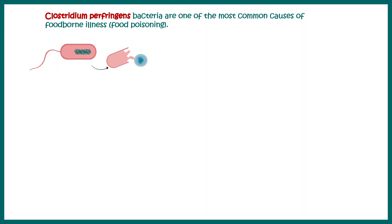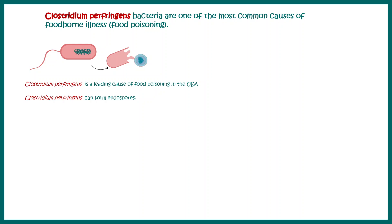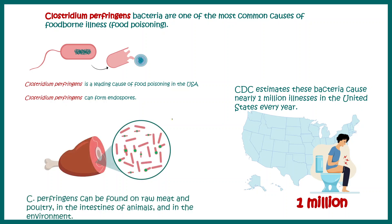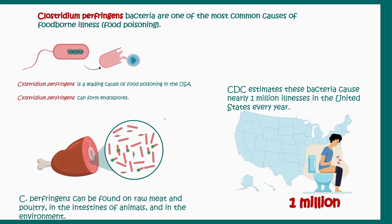Clostridium perfringens is another bacteria that is a severe cause of foodborne illness. It can form endospores, which are resistant to heat — meaning they can survive even in cooked food. The CDC estimates this bacteria causes nearly 1 million cases in the United States every year, and it is mostly found in raw meat and poultry products.